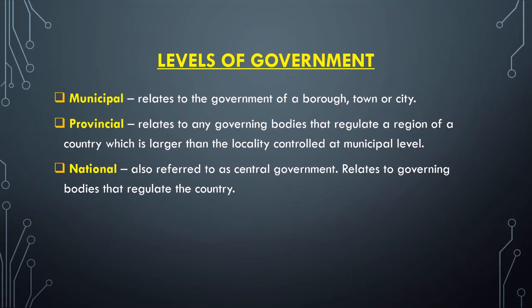The levels of government are also known as the spheres of government. Many students confuse levels of government with branches or organs of government. The organs of government are the executive, the judiciary, and the legislature. The legislature, which is parliament, is seated in Cape Town and is made up of the National Assembly and the National Council of Provinces. It makes laws, the executive carries out those laws, and the judiciary applies the laws to specific court cases.